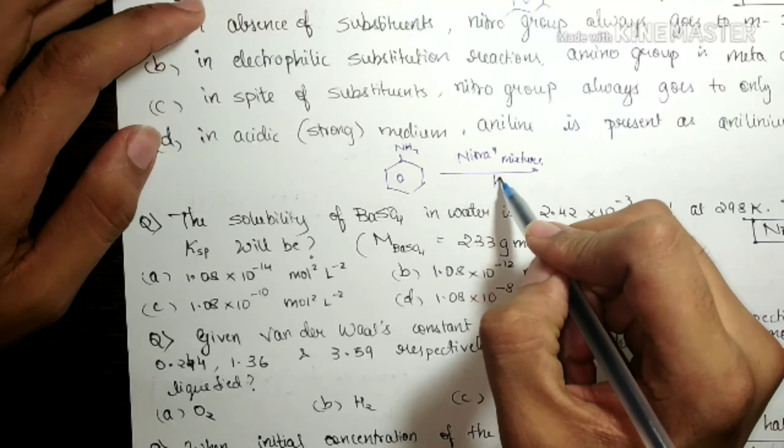Here it becomes a meta-directing group, this NH3+ group. So that meta-nitro-aniline also forms with a significant percentage. We will get para and ortho also - ortho-nitro-aniline NH2 and para NH2 and NO2. Along with that meta also we will be getting. This is an NCERT reaction. But this is what actually happens because it temporarily becomes NH3+, that is anilinium ion. So option D will be perfectly correct. In acidic medium, aniline is present as anilinium ion, so it becomes a meta-directing group temporarily.